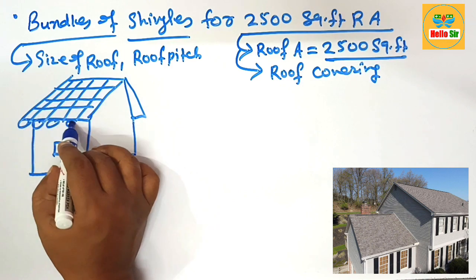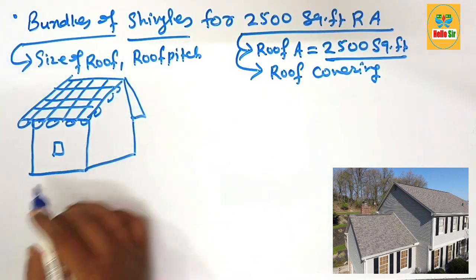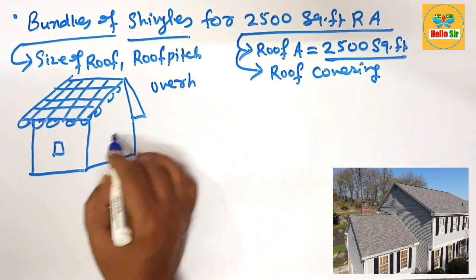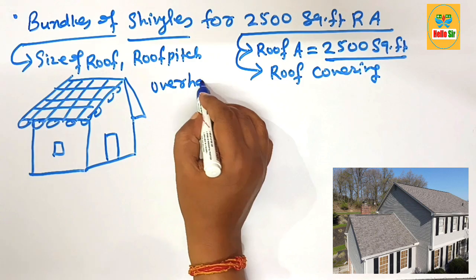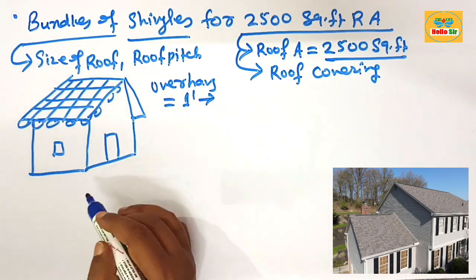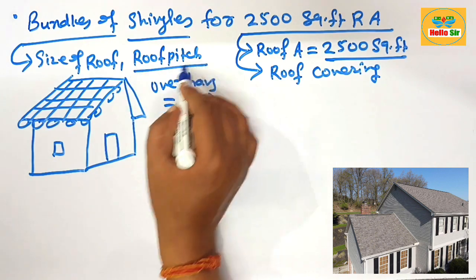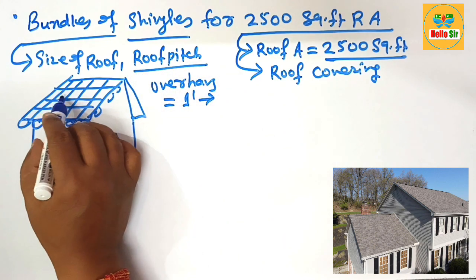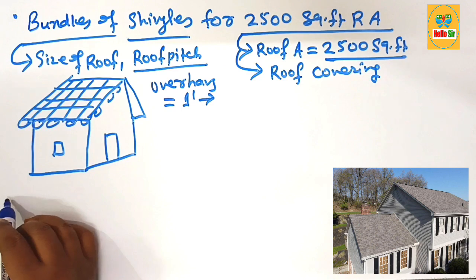And this one is overhang. What will be overhang? The overhang will be one foot for each side. And another factor that is roof pitch determining the total square footage of roof area.